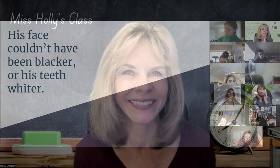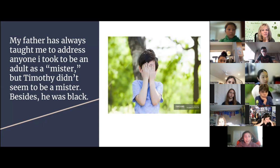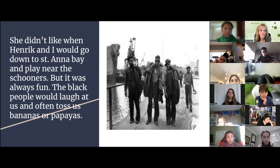His face couldn't have been blacker or his teeth whiter. They made an alabaster trench in his mouth and his pink and purple lips peeled back over them like the meat of a conch shell. My father had always taught me to address anyone I took to be an adult as a mister, but Timothy didn't seem to be a mister. Besides, he was black. My mother was right. She didn't like them.